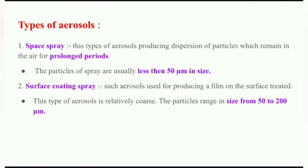The first type of aerosol is space spray. This type of aerosol will produce a dispersion of particles and remain for a prolonged period of time where they are applied or administered. The particle size range for this type of spray will be less than 50 micrometers. The examples for space spray aerosol are insecticide, disinfectant, and room deodorant.